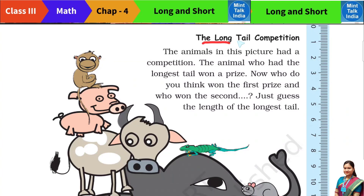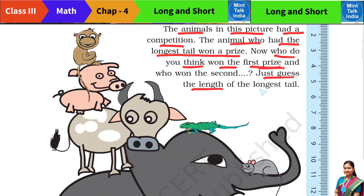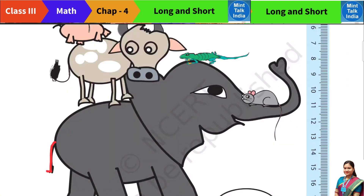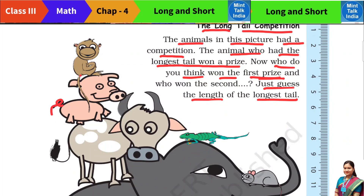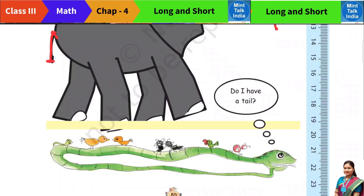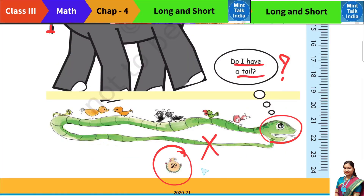The last activity is the long tail competition. The animals in this picture had a competition for who had the longest tail. Who do you think won the first prize? Elephant's tail is small, pig's tail is small, but monkey's tail is very long — so I think monkey will get the first prize. And who got the second prize? I think the cow gets second prize. And the snake is asking: do I have a tail? No — the snake's whole body is so long, it is not just a tail.